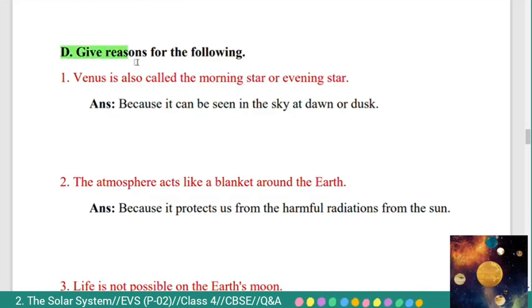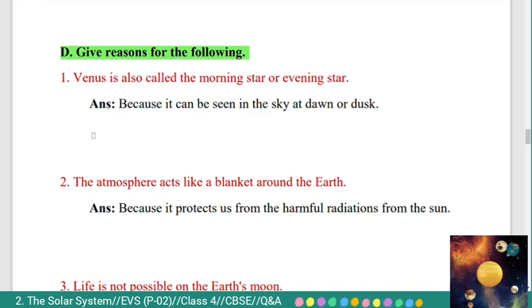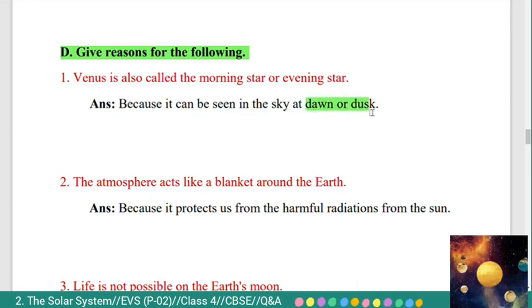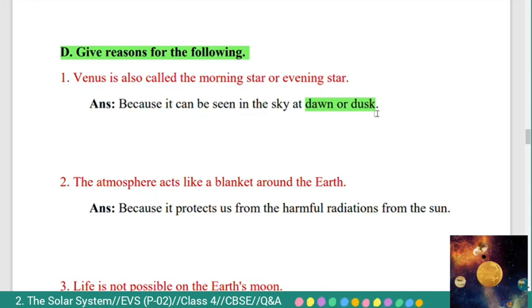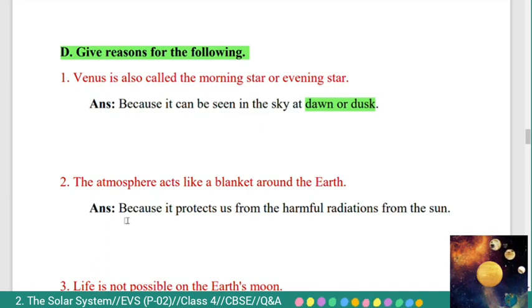Section D: give reasons. First: Venus is also called the Morning star or Evening star. Answer: because it can be seen in the sky at dawn and dusk. Second: the atmosphere acts like a blanket around the Earth. Answer: because it protects us from the harmful radiations from the Sun.